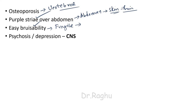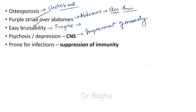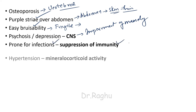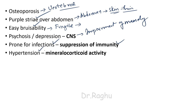There can also be psychosis, depression, and impairment of memory due to the actions of cortisol on the central nervous system. These patients are also prone to infections because cortisol causes suppression of immunity. There can also be hypertension because glucocorticoids have mineralocorticoid activity — mineralocorticoids cause sodium reabsorption, and excess sodium produces hypertension.